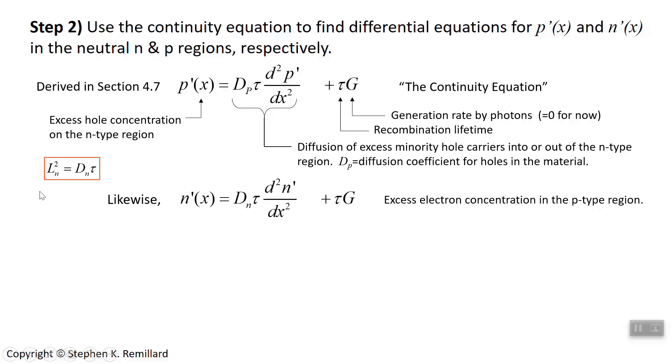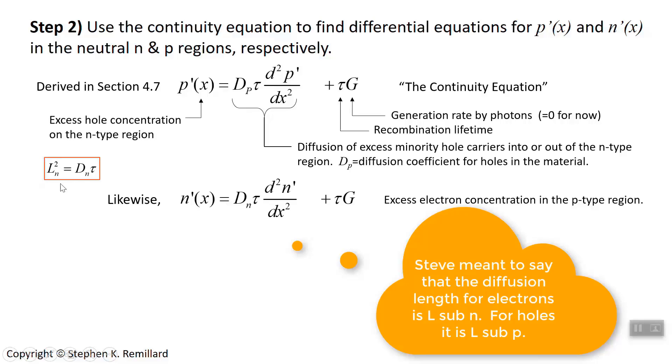Ignore the tau g. And you might feel compelled to replace the diffusion coefficient and recombination time, that product, with a single l squared. That l is the diffusion length. The diffusion length on the n side is l sub n. The diffusion length on the p side is l sub p,